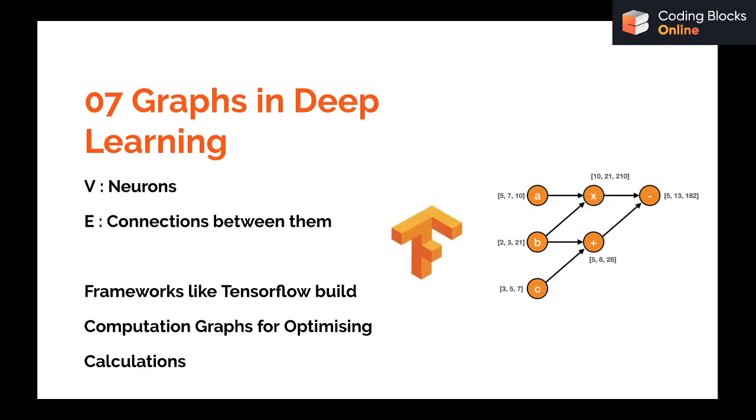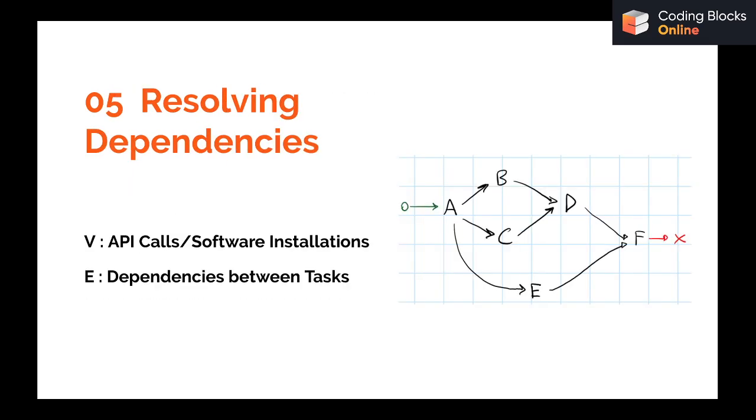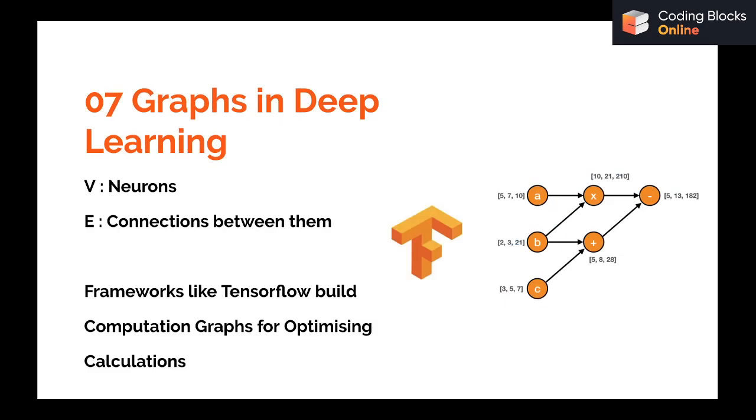Graphs are also used in deep learning. If you talk about neural networks, then all neurons can be treated as vertices and there can be connections between them, those can be called as edges. Frameworks like TensorFlow also build computation graphs for optimizing different calculations. Graphs are used in artificial intelligence to simplify a lot of mathematical calculations and do a lot of work in the back end.